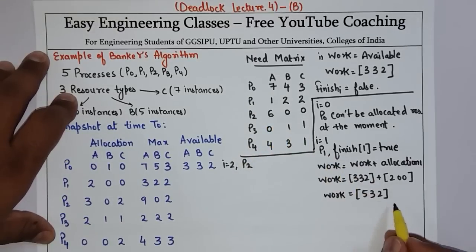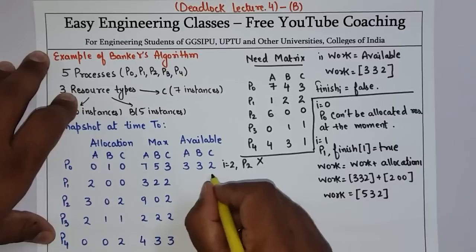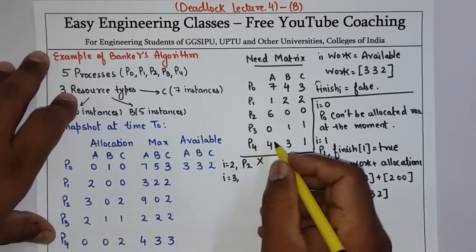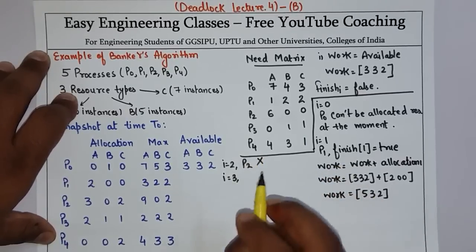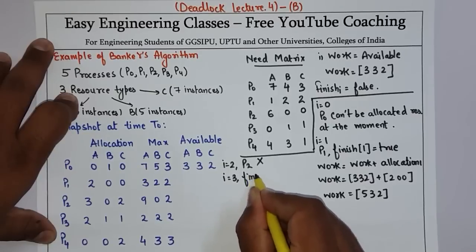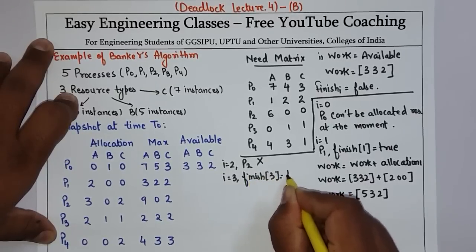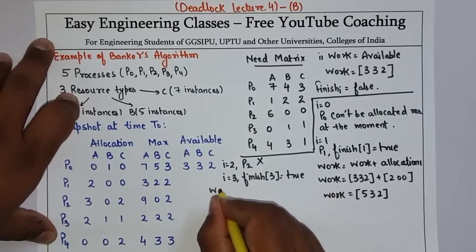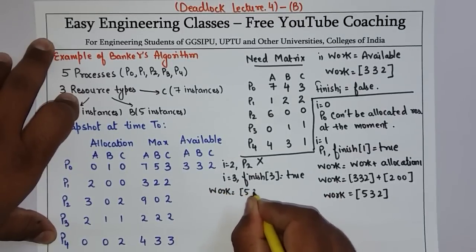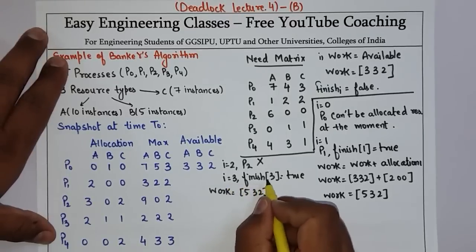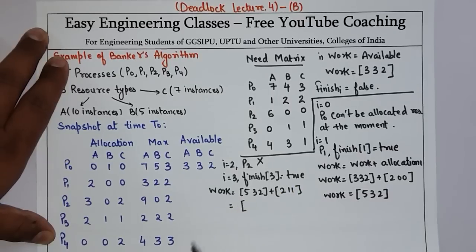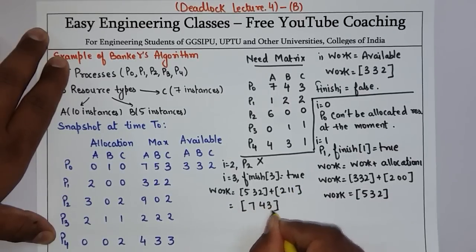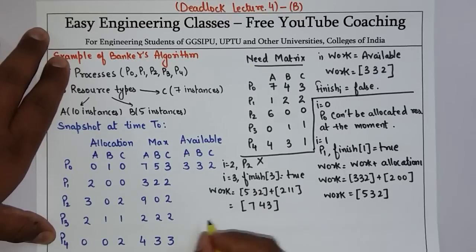P2 will not work at this moment. Then for i=3, that is P3: P3's need is less than Work, which means we can run P3. So Finish[3] = true. The new Work will be 5, 3, 2 plus Allocation of P3, which is 2, 1, 1. So Work is now 7, 4, 3.